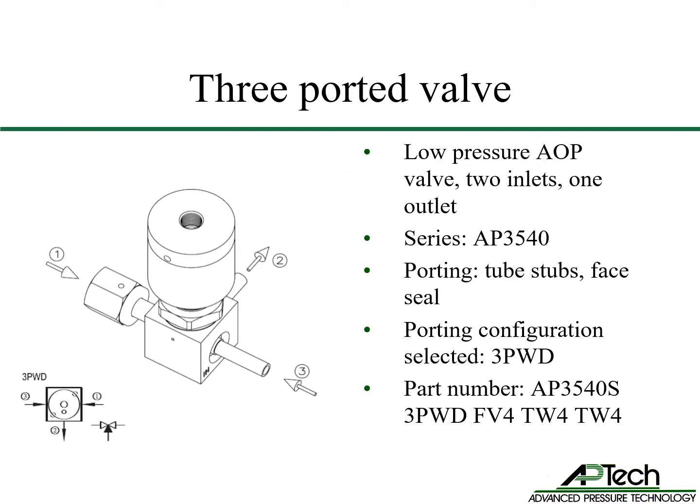The three-ported valve with two inlets and one outlet is a 3540 valve. The inlet port is quarter inch female face seal and flows through the body under the seat to the other inlet port with a quarter inch tube stub. The outlet port is opposite the inlet ports and is downstream of the seat. This is a 3PWD flow pattern. When configuring the part number, the ports are specified in sequential order starting with port number one. The part number is AP3540S3PWDFV4TW4TW4.